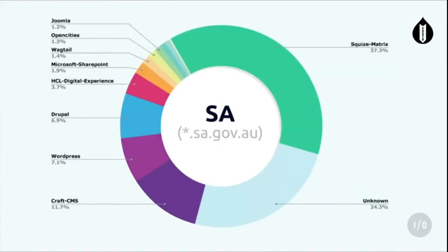South Australia - and this is where things get kind of interesting. This graph looks a bit different from New South Wales. Squiz here at 37%, Drupal is way down at 6.9%. And actually a healthy Craft community - Craft is another quasi-open source PHP CMS.